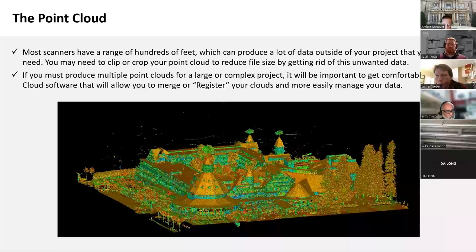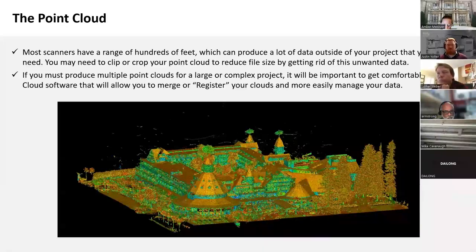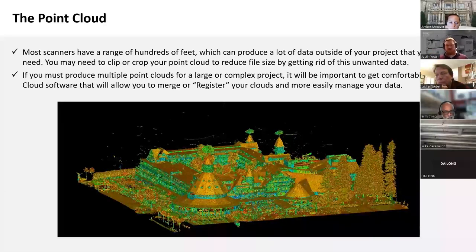Most scanners have a range of hundreds of feet, which can produce a lot of data outside your project that you don't need. You may need to clip or crop your point cloud to reduce file size. For example, when scanning a roof with the Horizon, you can capture buildings far away, which can hamper your ability to import it into AutoCAD or Revit later. If you must produce multiple point clouds for a larger complex project, get comfortable with point cloud software that allows you to merge or register your clouds. Like traditional sketching, properly scanning a structure takes lots of practice to do correctly and efficiently.